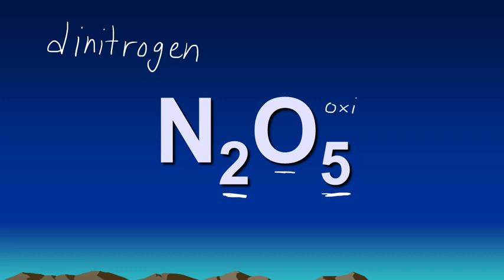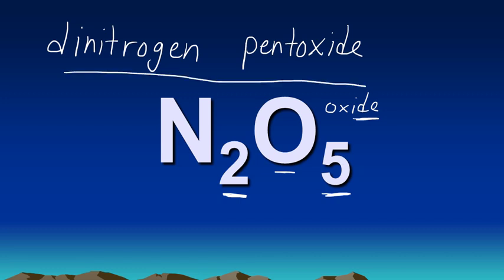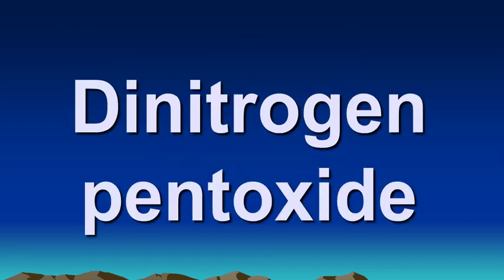So oxygen is going to become oxide, and we call that part of it pentoxide. So the name for this compound is dinitrogen pentoxide, N2O5.